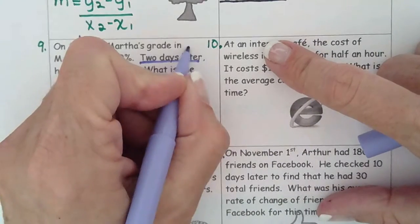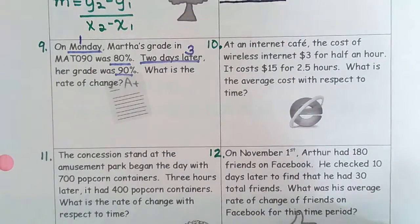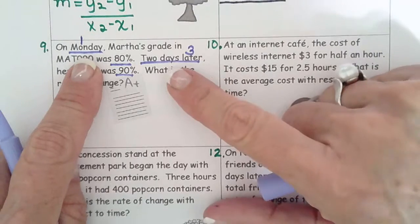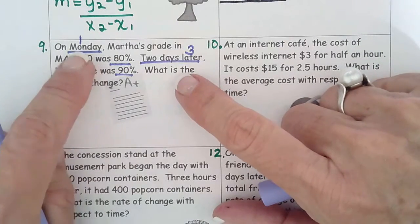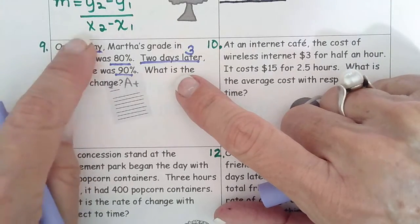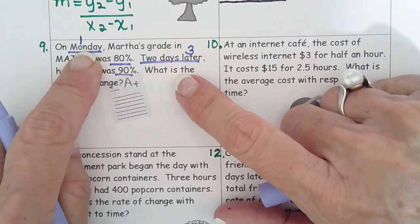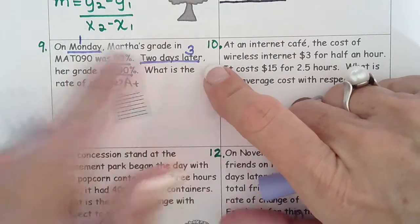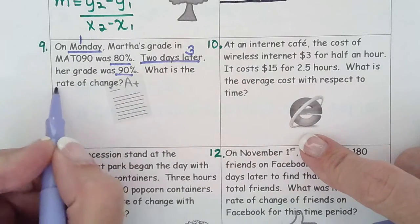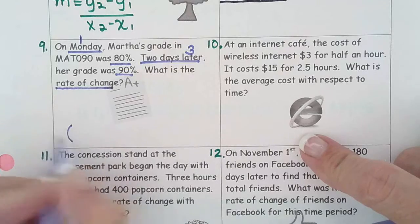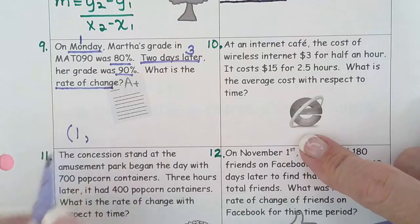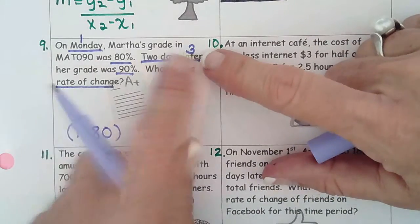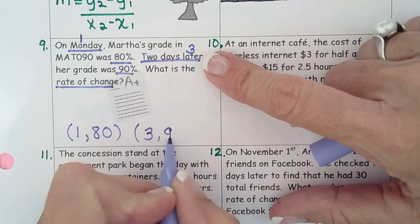Two days later, one plus two gives us day three. Sometimes they make you think a little bit — obviously you can't have your x be 'Monday'; how are you going to find the slope of two days minus Monday? So we call Monday day one. You could have called it day zero — if you did that and used two for the second, that's fine, as long as you add two. Our ordered pairs are: time one (first day), grade 80 percent; time three, grade 90 percent.